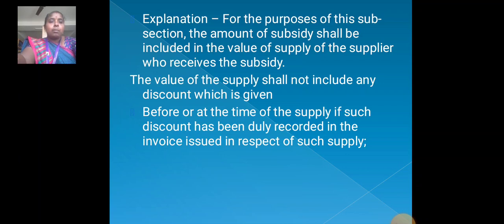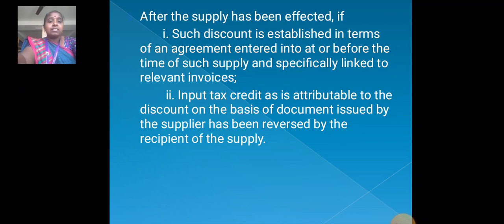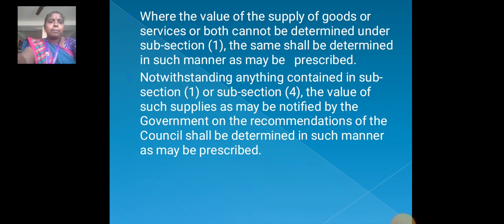For the purpose of this subsection, the amount of subsidy shall be included in the value of supply of the supplier who receives the subsidy. The value of the supply shall not include any discount which is given before or at the time of supply if such discount has been duly recorded in the invoice issued in respect of such supply. After the supply has been affected, if such discount is established in terms of an agreement entered into at or before the time of such supply and specifically linked to relevant invoices, and the input tax credit attributable to the discount on the basis of a document issued by the supplier has been reversed by the recipient of the supply. Where the value of supply of goods or services or both cannot be determined under subsection 1, the same shall be determined in such manner as may be prescribed.